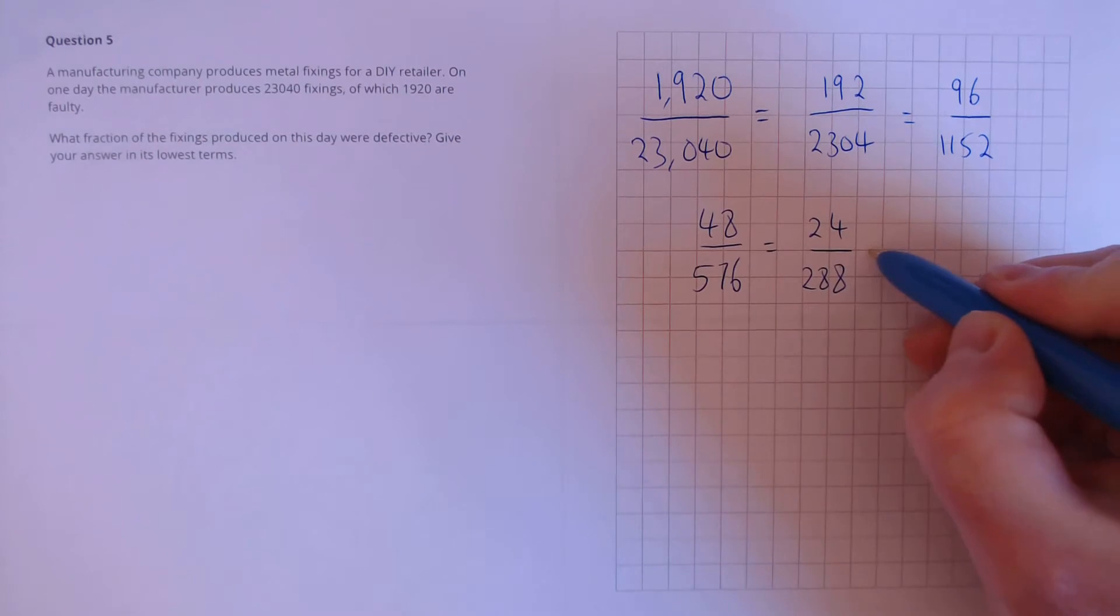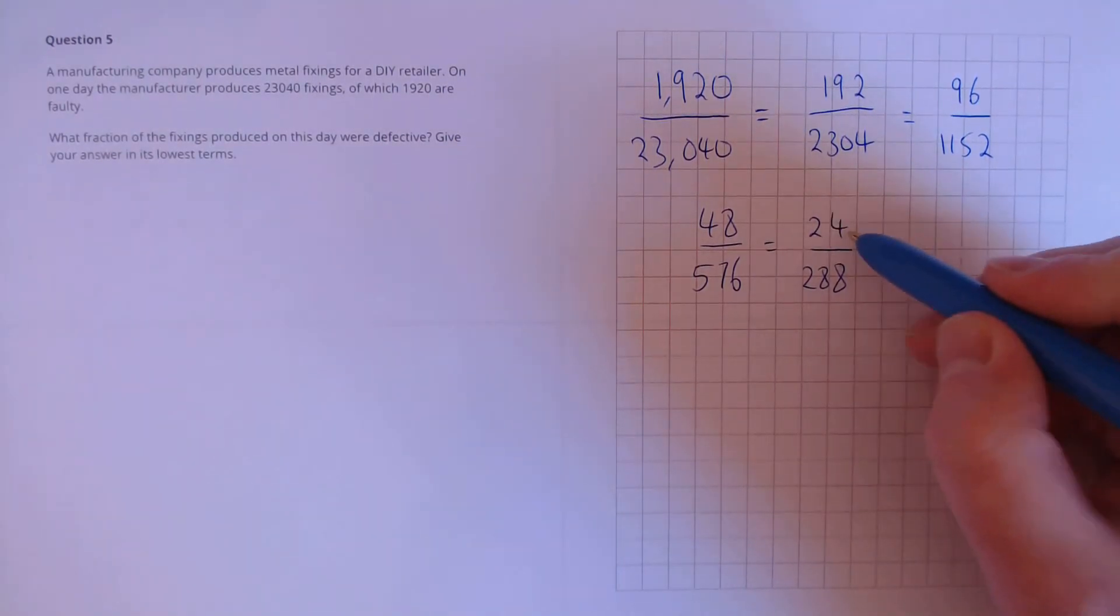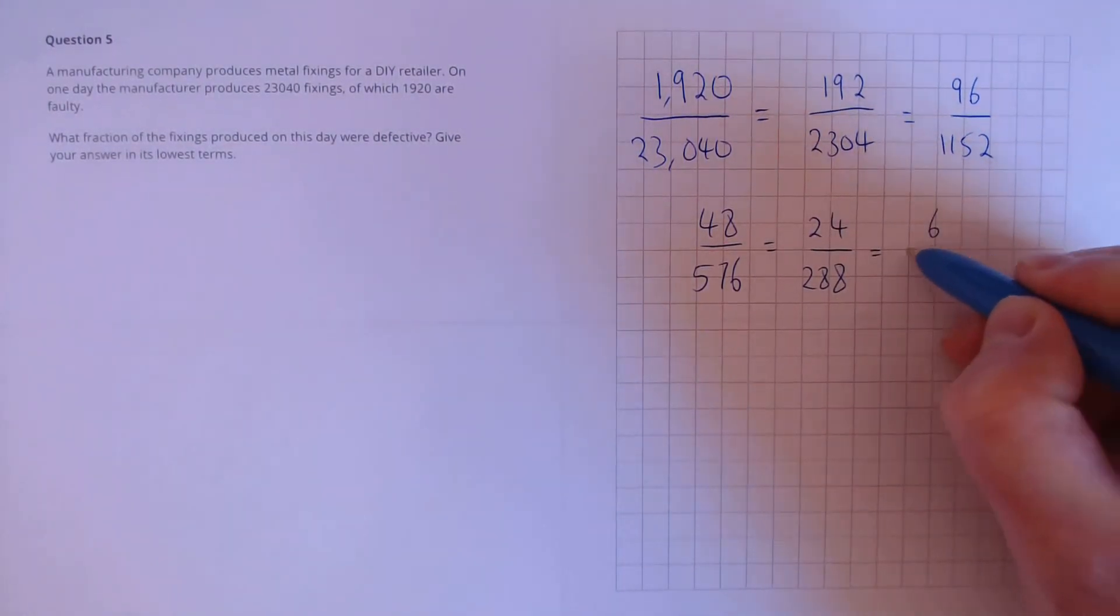At this point, I noticed that both actually divide by 4. So we can divide 24 by 4, that's 6, and 288 by 4, that's 72.